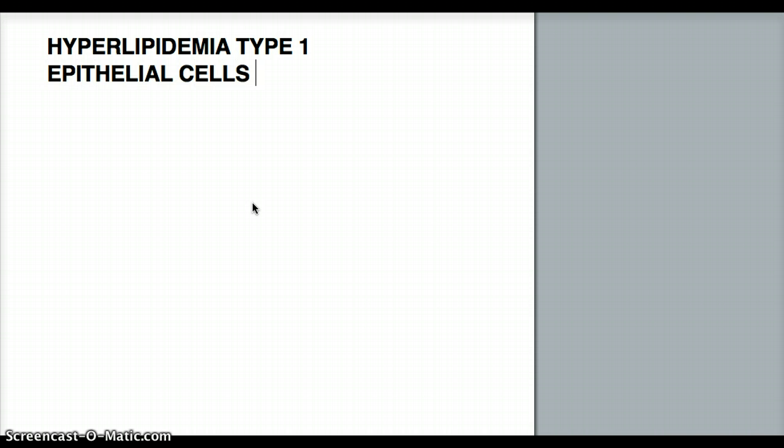When we eat any food that has cholesterol, triglycerides, or fats, they are broken down in our duodenum and then absorbed from the intestine by the epithelial cells of the intestine. So it all starts with the epithelial cells of the intestine — that's where it begins.